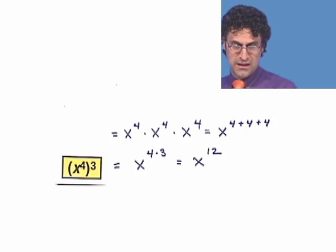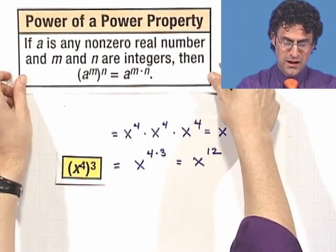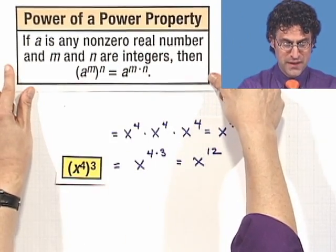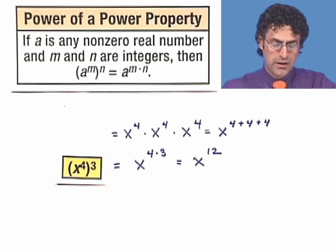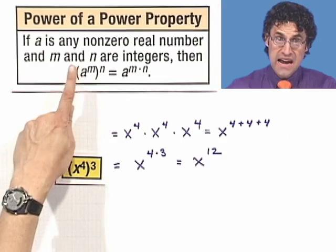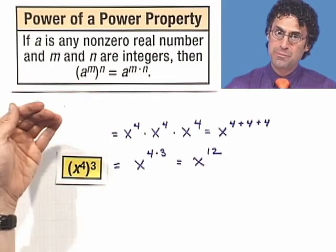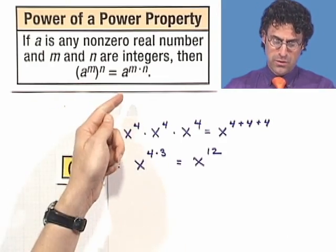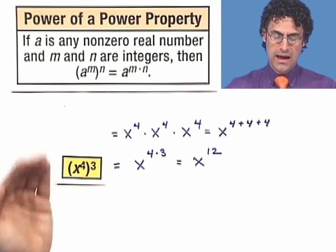That inspires and in fact is the genesis for the proof of the power of a power property. If a is any non-zero real number and m and n are integers, then if I take a to the m and I take that quantity and raise it to the n power, the answer will equal a raised to the power m times n.